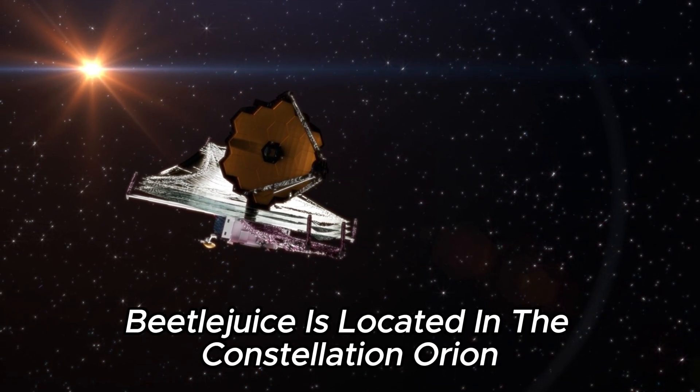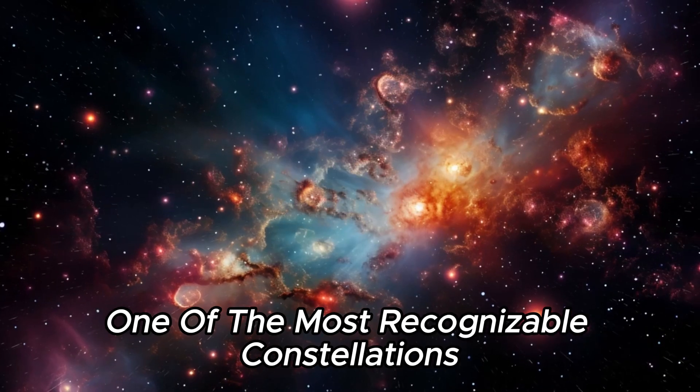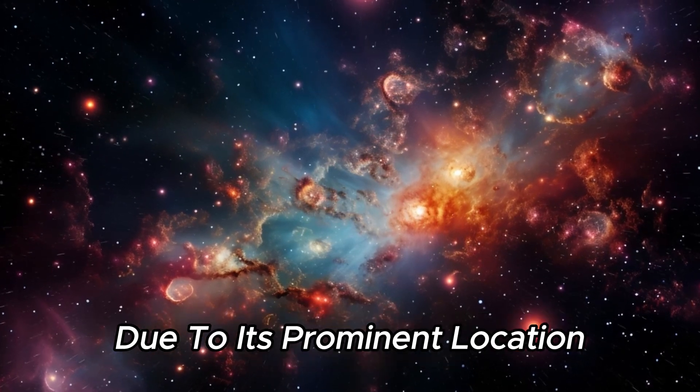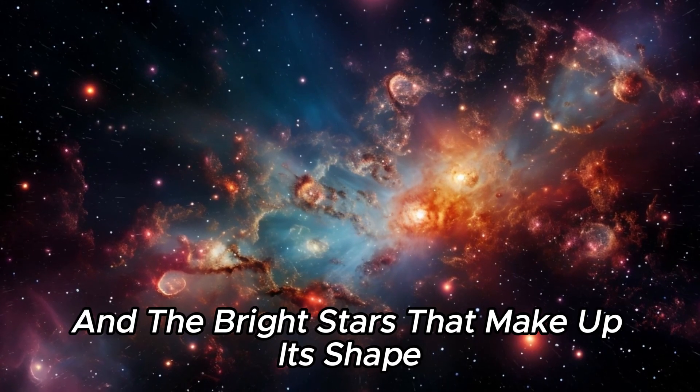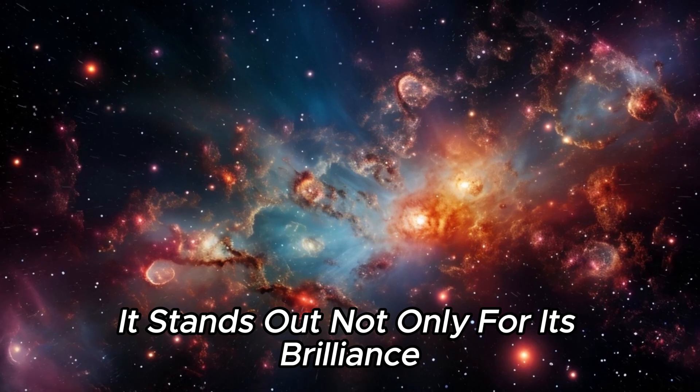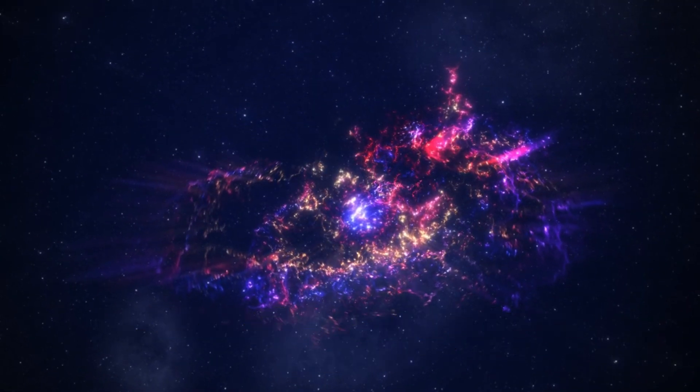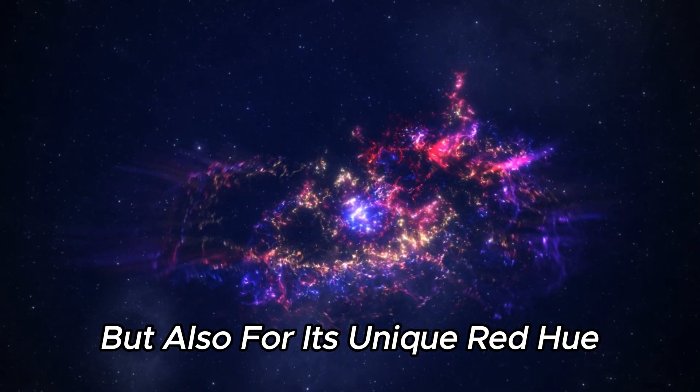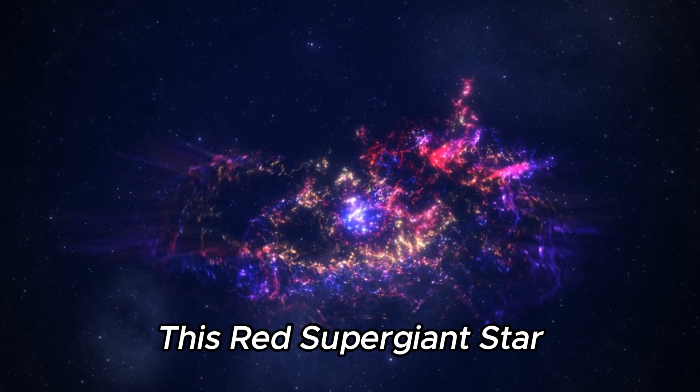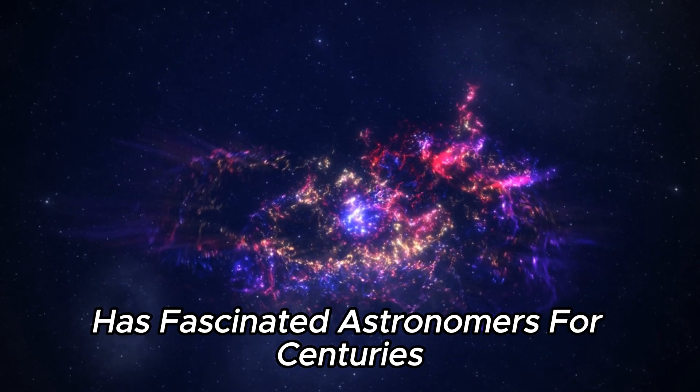Betelgeuse is located in the constellation Orion, one of the most recognizable constellations due to its prominent location and the bright stars that make up its shape. It stands out not only for its brilliance, but also for its unique red hue.